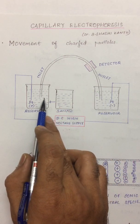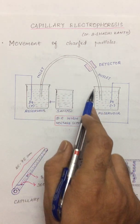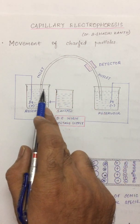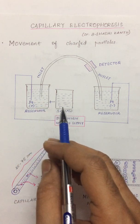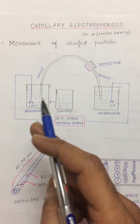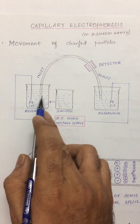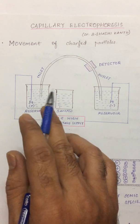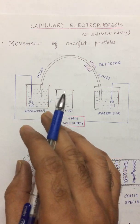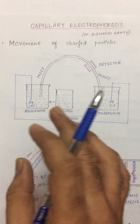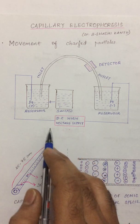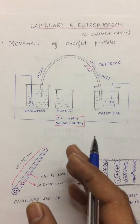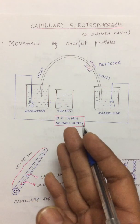The most important part of the instrumentation is the capillary. This capillary is made up of fused silica where a polyamide coating is present around the fused silica. The polyamide coating will give some flexibility to the capillary and make it very strong. The capillary is filled with a mobile phase or we call it as a buffer.